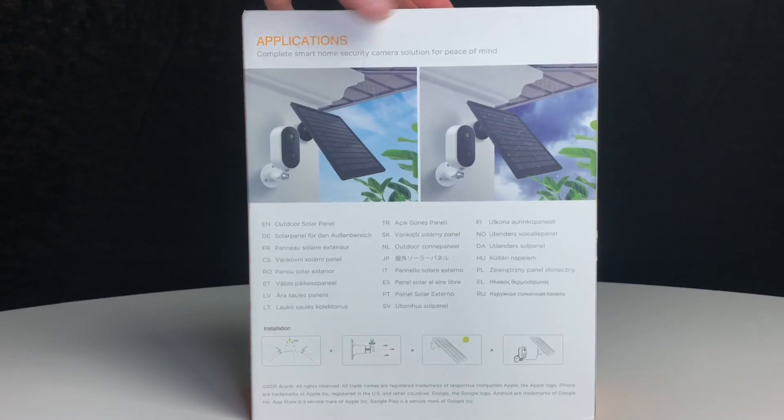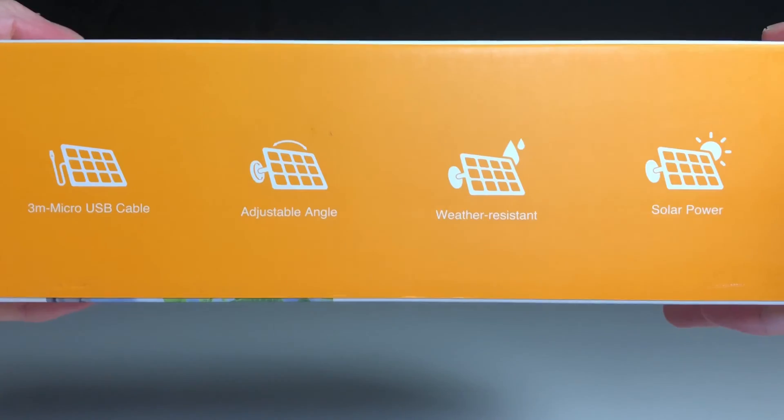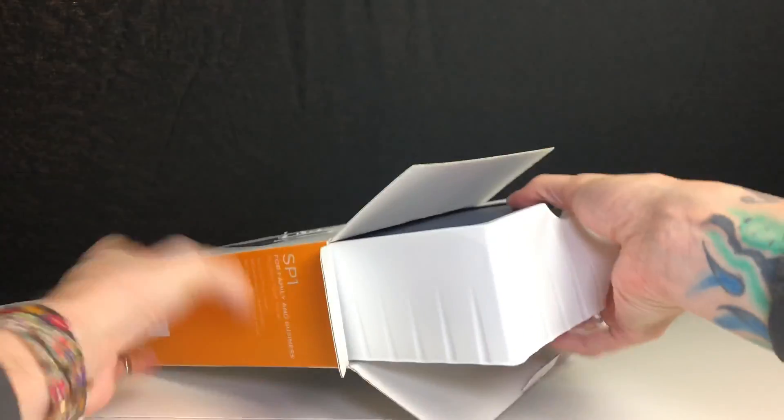This is the Orenti SP1 solar panel which will allow us to get energy from the sun and charge our camera.